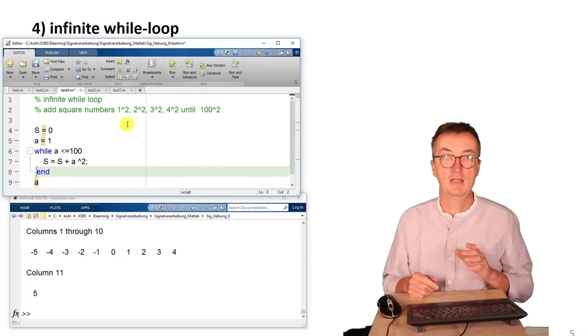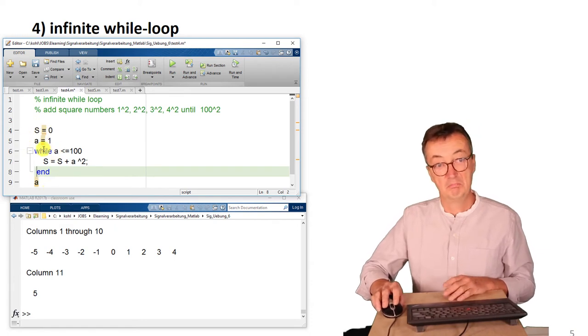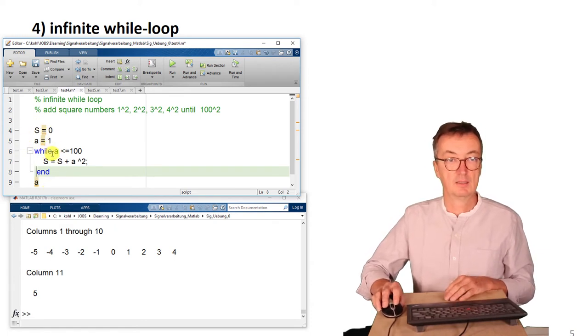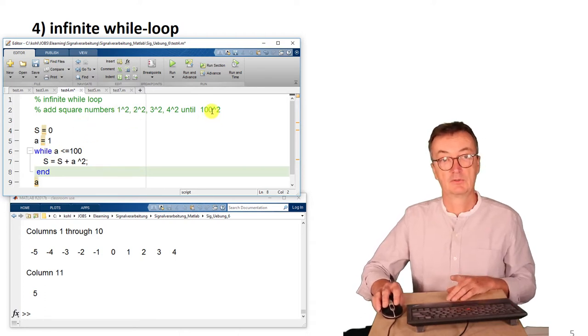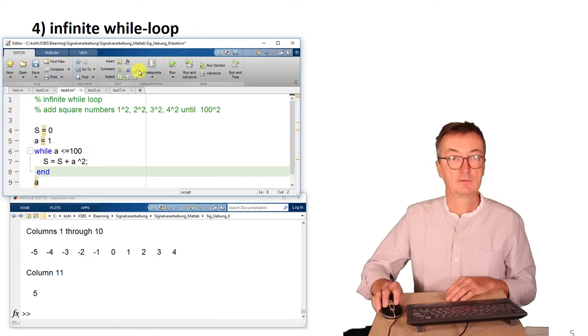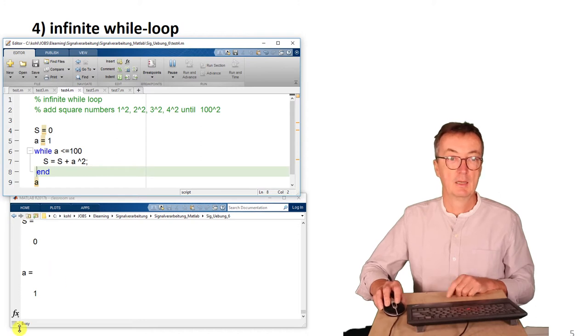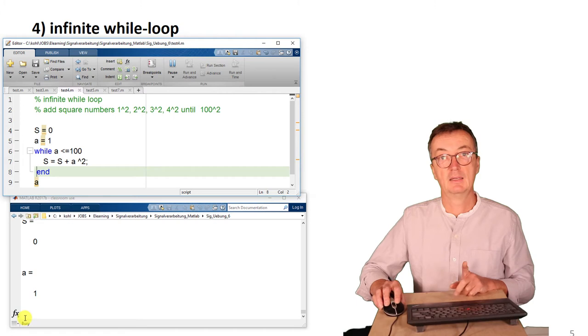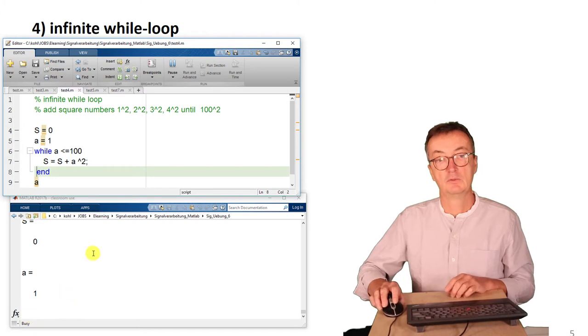Another common problem, while-loops are infinite. Let's have a look at this short program, while-loop. It's adding up all the square numbers from 1 square to 100 square. And when starting it, it's running. Make sure that you always check. In this case, for instance, here, this little busy sign is indicating that the loop is just not stopping.